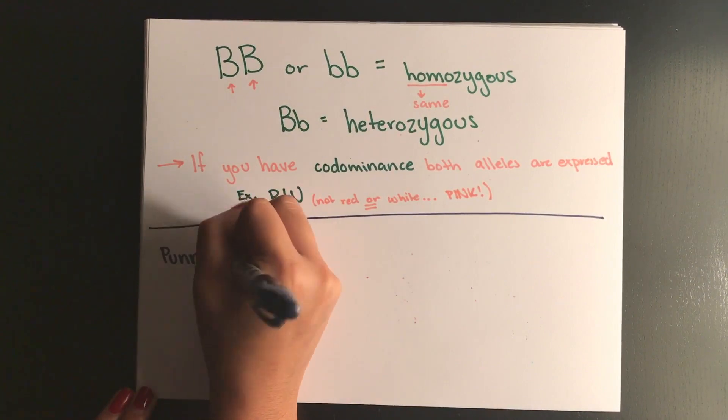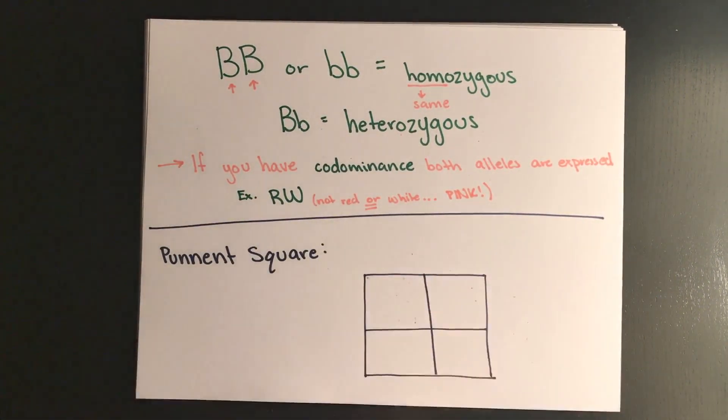The SAT biology test is likely going to test you on predicting the genotype and phenotype of offspring, and the easiest way to do this is by creating a Punnett square.